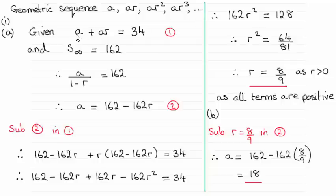So the sum of the first two terms we're told is 34 so it's going to give me a plus ar is 34.